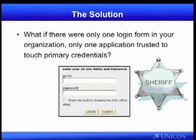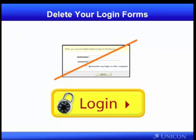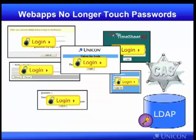Wouldn't it be dreamy if there were only one login form in your organization — only one application trusted to touch these primary credentials? And CAS seeks to be that application. It's looking to be the web application that end users interact with to present usernames and passwords or whatever their credentials are going to be. It's a trusted intermediary that brokers authentication to these other applications. The idea is to get rid of all your individual application login forms, and instead all of these make use of CAS and the CAS login experience for authentication.